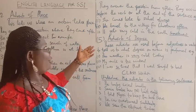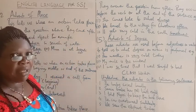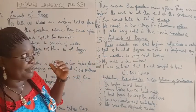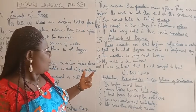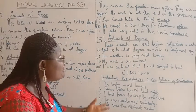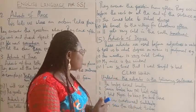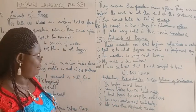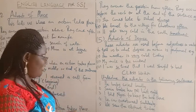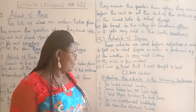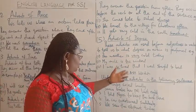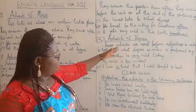The last but not the least — number five: adverb of degree. These adverbs are used before adjectives or verbs to tell us to what degree an action is performed. For example: 'The weather is very cold today.' 'My uncle is too wicked.' 'I was so tired that I went straight to bed.' The words 'very', 'too', and 'so' are adverbs of degree.